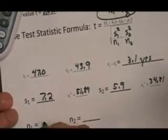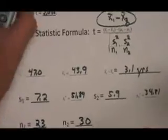With sample size, we know that. The sample size of the first one was 23. My sample size of my second one is 30. I've got filled out everything we need. Now we need to stick these values in the formula.